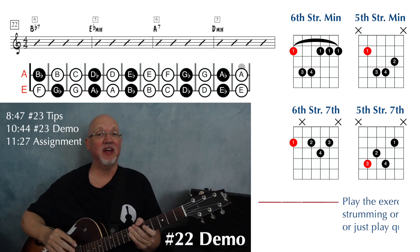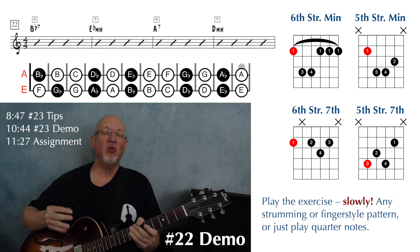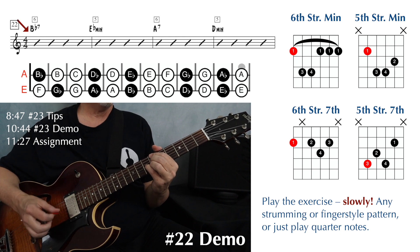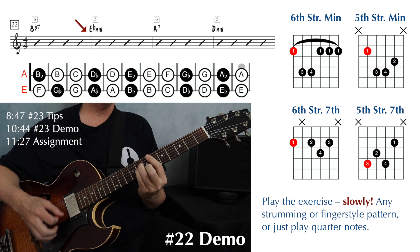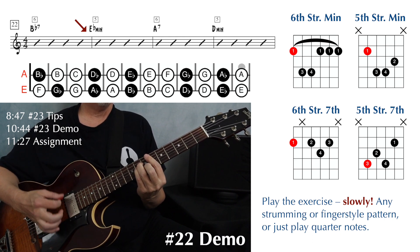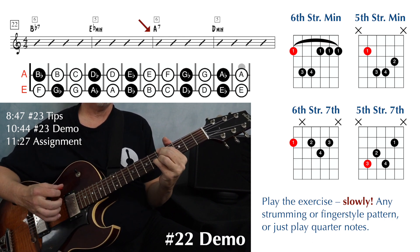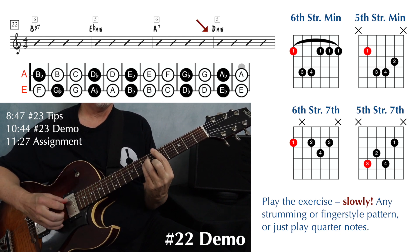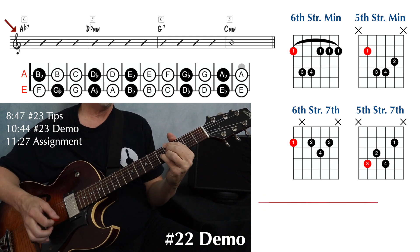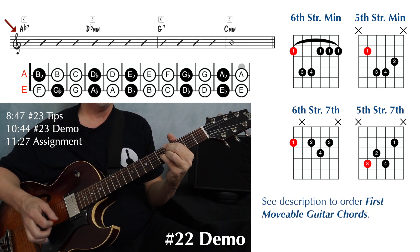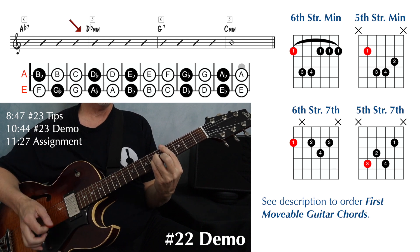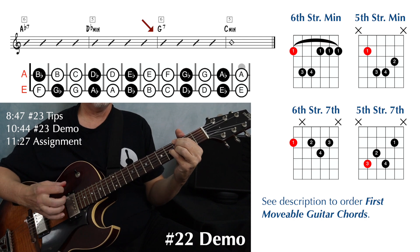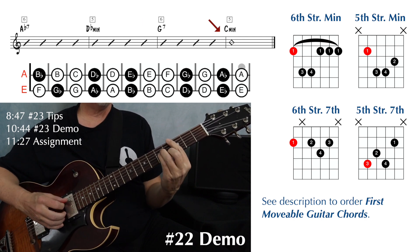And then you play the exercise again — nice and slow. The speed will come with time. B flat seven. E flat minor. A7. D minor. A flat seven. D flat minor. G7. And C minor.